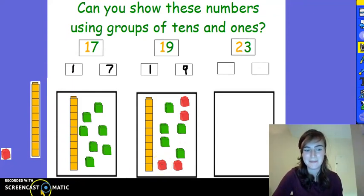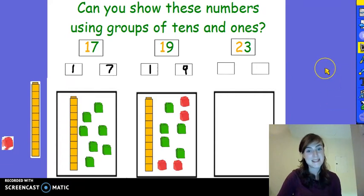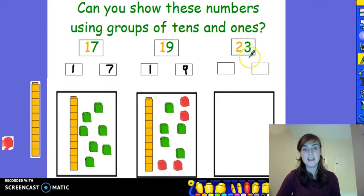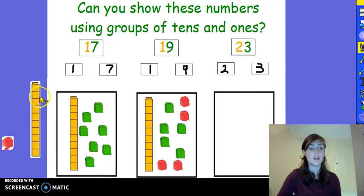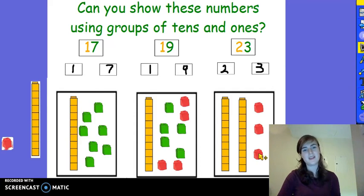Pause the video and see if you can try our third number by yourself. It's 23. Think about how many towers of 10 we will need and how many cubes we will need as well. When you've finished, play the video and we'll complete it together. Let's see how you got on. Our number is 23, which means we have 2 groups of 10 and 3 ones left over. Well done.